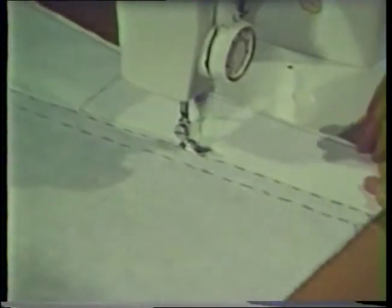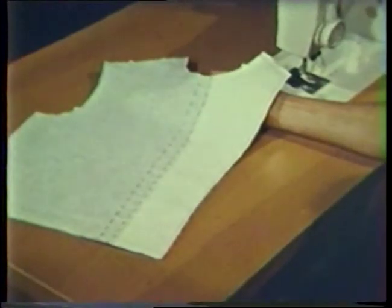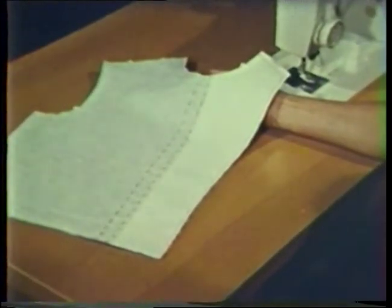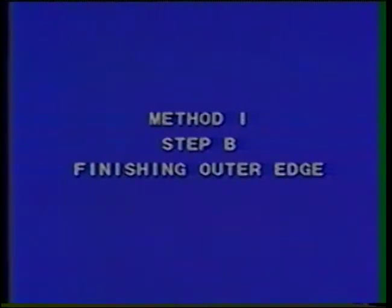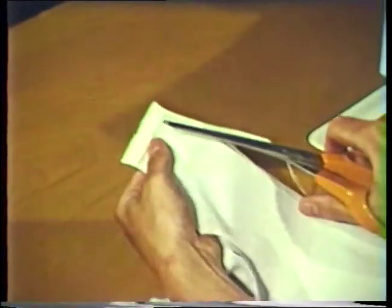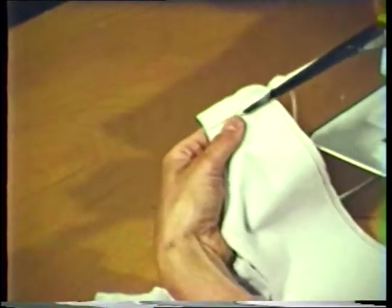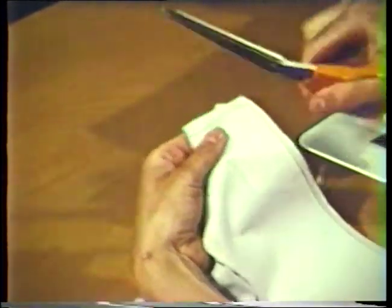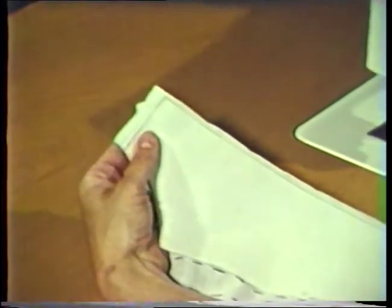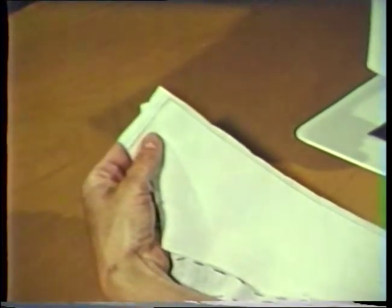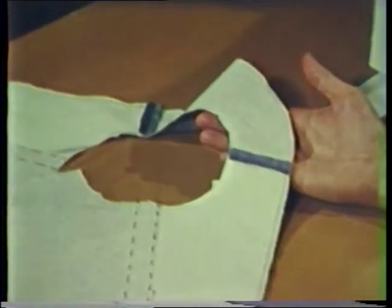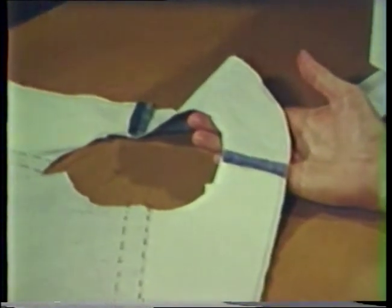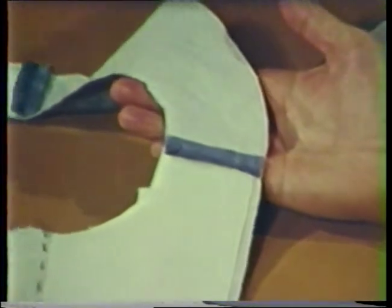The inner edge is stitched near the fold line either by machine or by hand. The machine stitching is being shown here; the hand stitching will be illustrated later. When machine stitching is used, start the stitching at the location of the top button. If the outer edge will be finished by turning and edge stitching, trim the interfacing close to the machine stitching. If zigzagging will be used, then do not trim the interfacing. Attach the front facing to the back neck facing at the shoulder seam. Press seams open, then trim to one fourth inch.